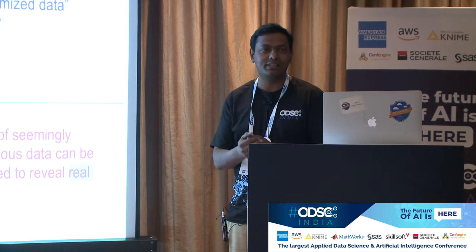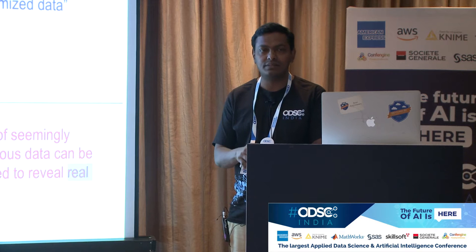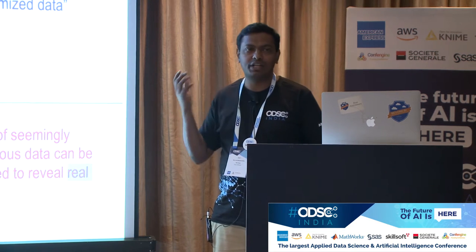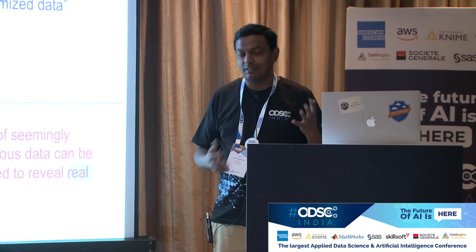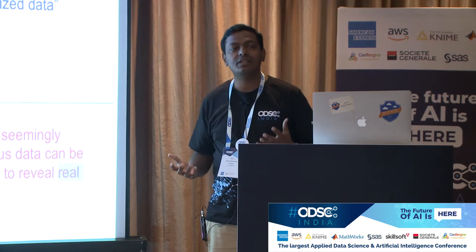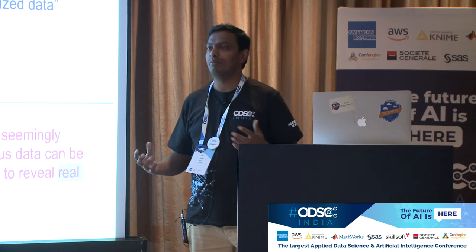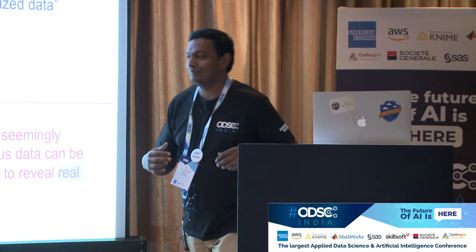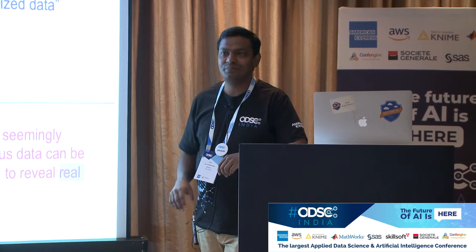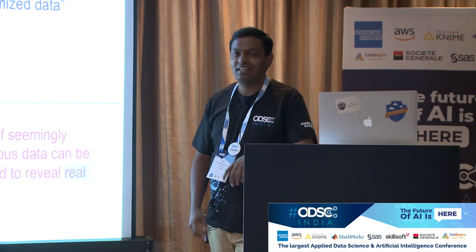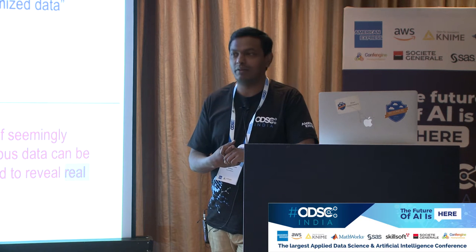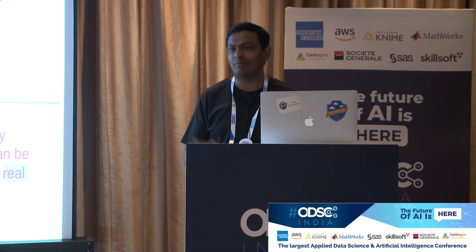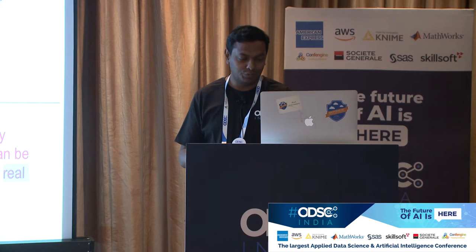Anonymization is a hammer to solve privacy issues — it's easy to implement and scalable. But de-anonymizing is also very easy; you just need to put in some effort. There's an even bigger example: a hospital in Massachusetts where the governor said he'd open up the data for everyone. Everything was anonymized, but people were able to de-anonymize it and knew the entire medical history of the governor. So anonymization is not the best way to protect private data.